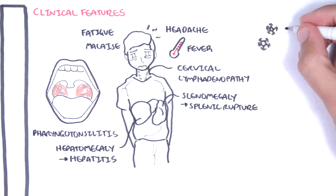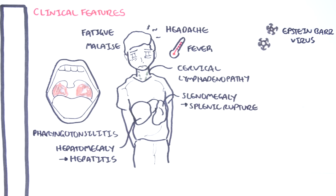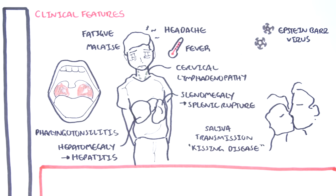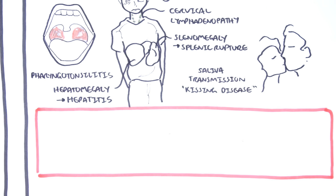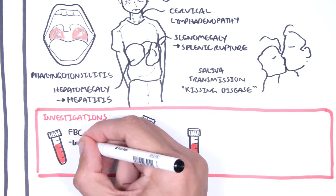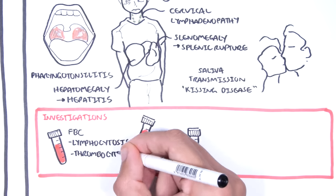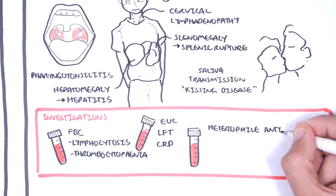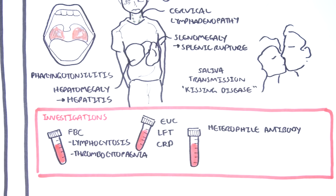Epstein-Barr virus is part of the herpes virus family and is transmitted via saliva — that is why it is known as the kissing disease. Once in the body, the Epstein-Barr virus targets B cells in the oropharynx, such as the tonsils, where they replicate as the body builds up an immune response. Investigations of infectious mononucleosis include a full blood count, which may show lymphocytosis and thrombocytopenia, as well as EUCs, LFTs, and CRP. A monospot test looks at heterophile antibodies in the blood, produced by those abnormal B cells infected by Epstein-Barr virus.